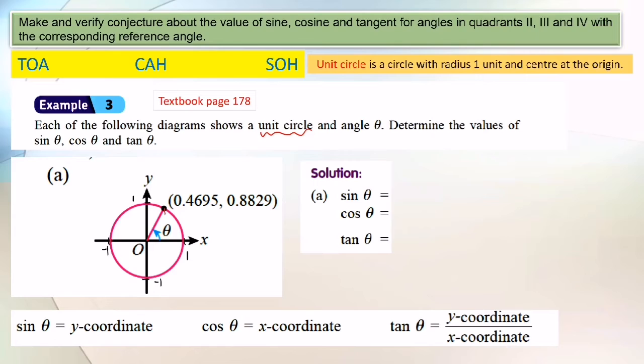If I draw a line from here, this is a right-angled triangle. For sine theta, it's opposite over hypotenuse. This is the radius, radius equals 1. And the opposite side is here.